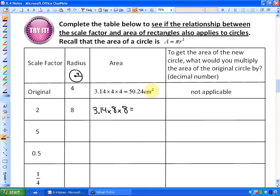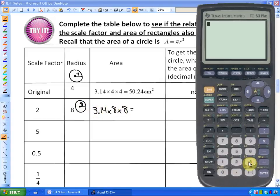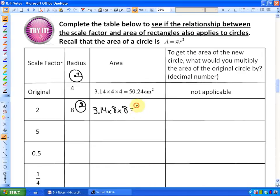So the rest of the table, I'll do the next one with you. If we use a scale factor of 2, so our original is 4, with a scale factor of 2, we'd have a radius that was 8. The area here would be 3.14 times 8 times 8. So we're just finding out the area of these new circles, and that would be 200.96.